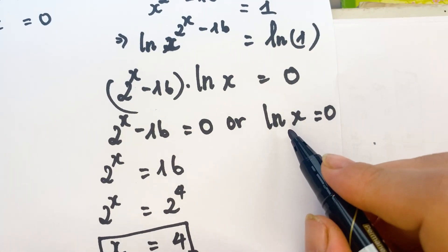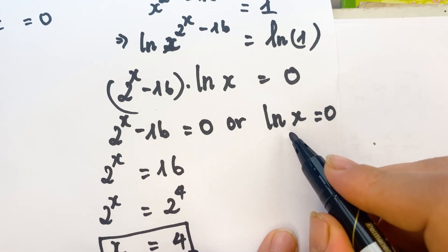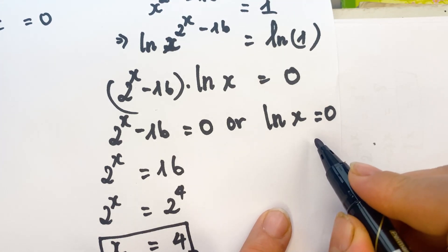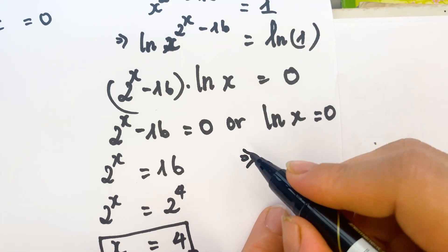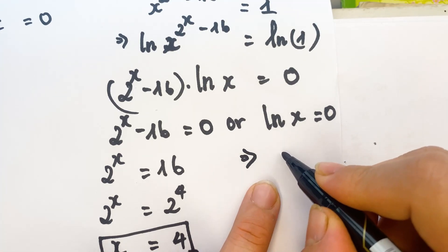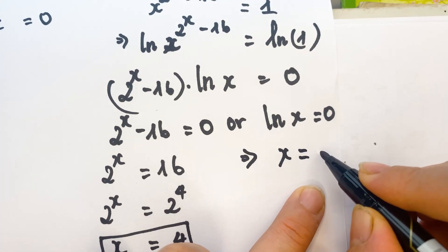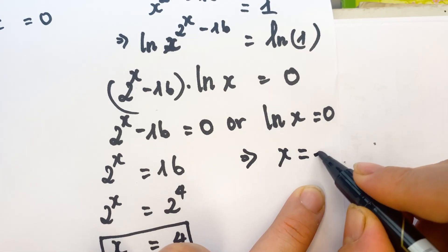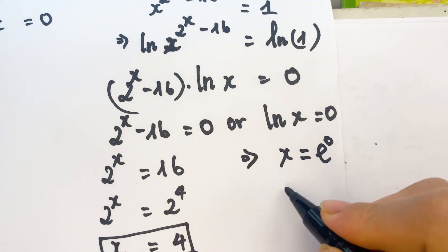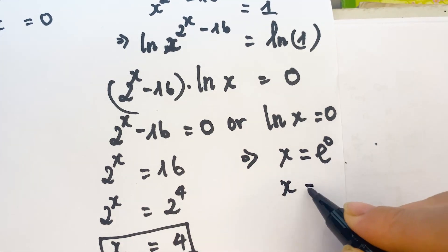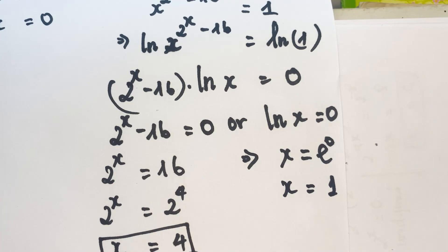For the second equation, we raise both sides as exponents of e. Therefore, x equals e^0, so x equals 1.